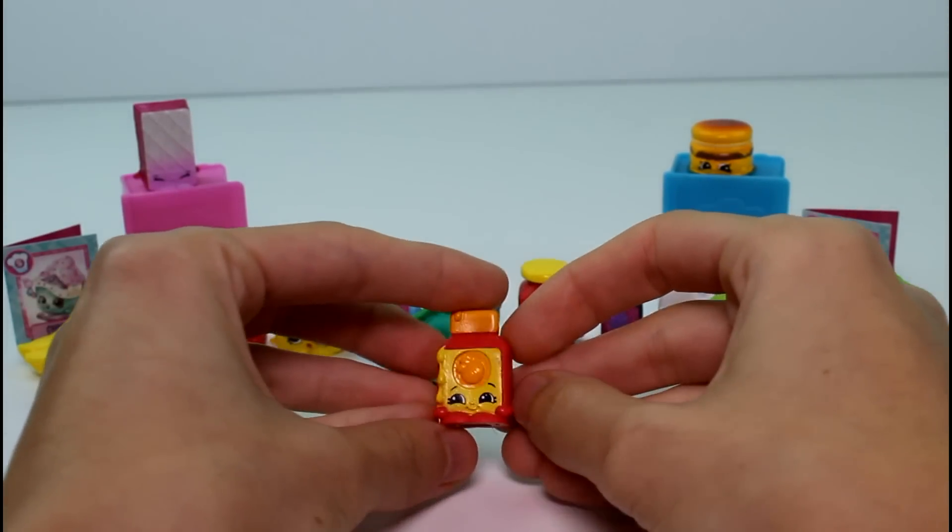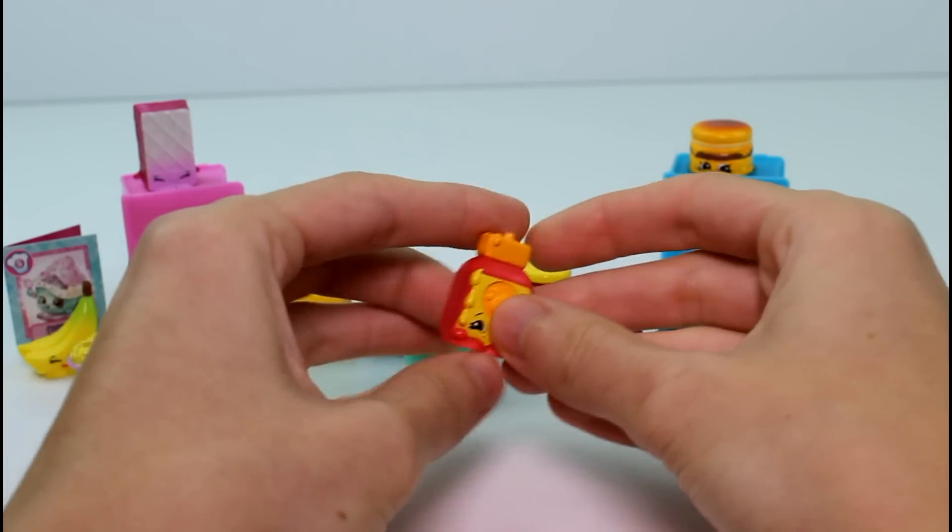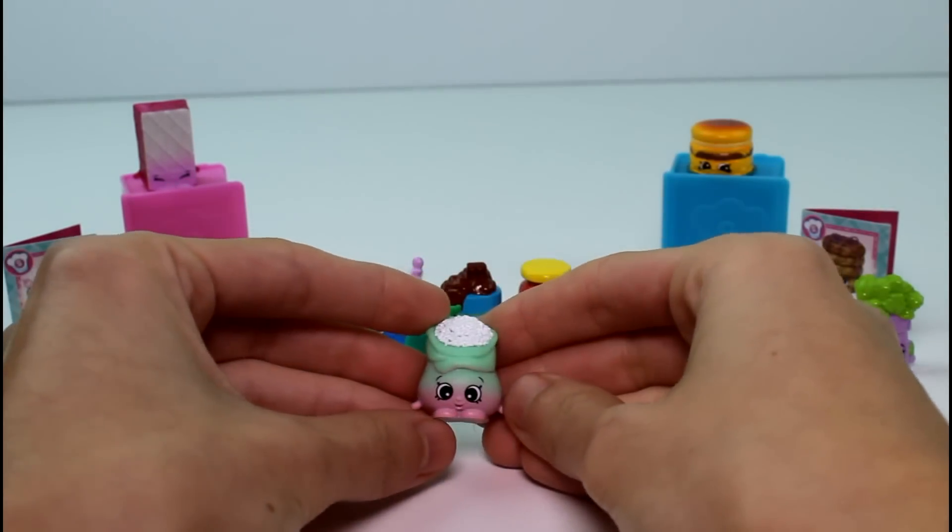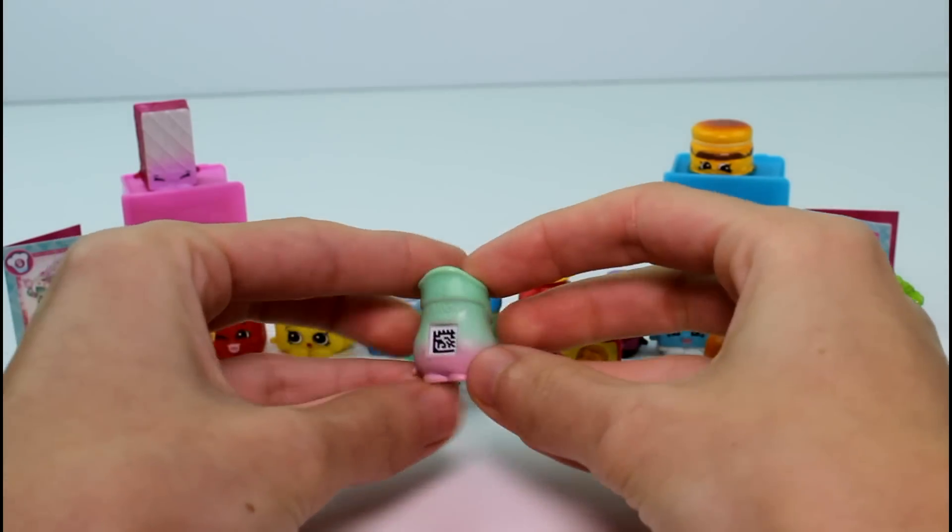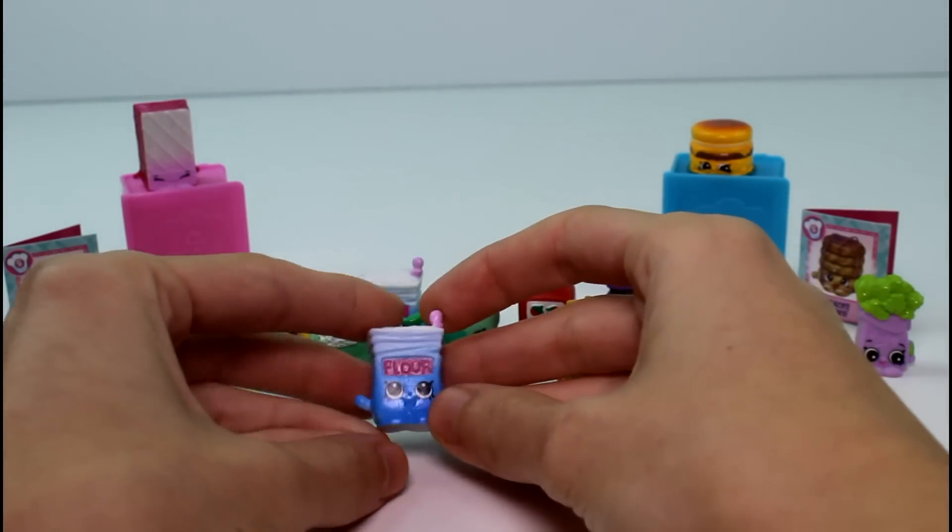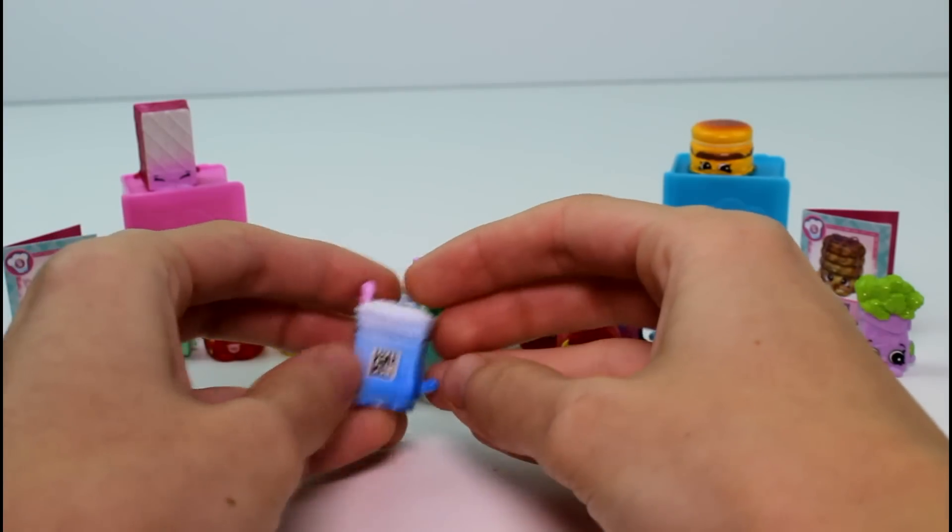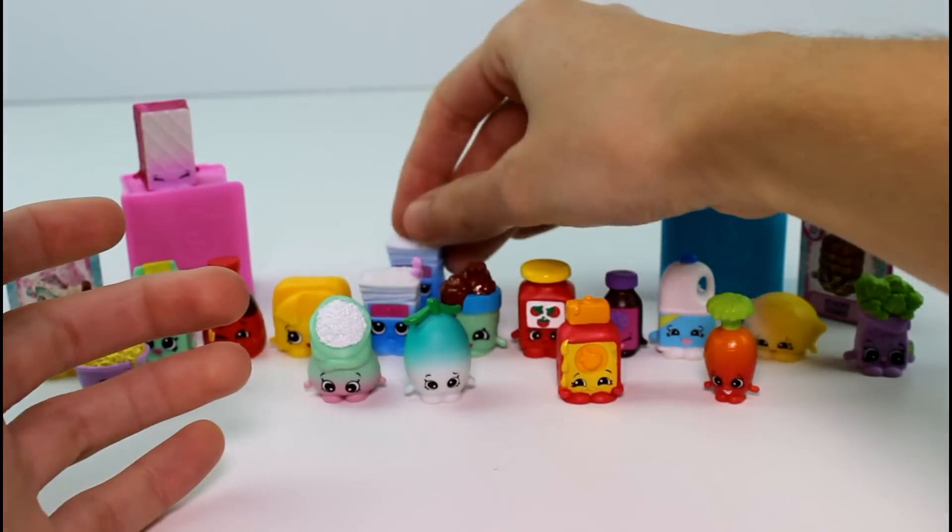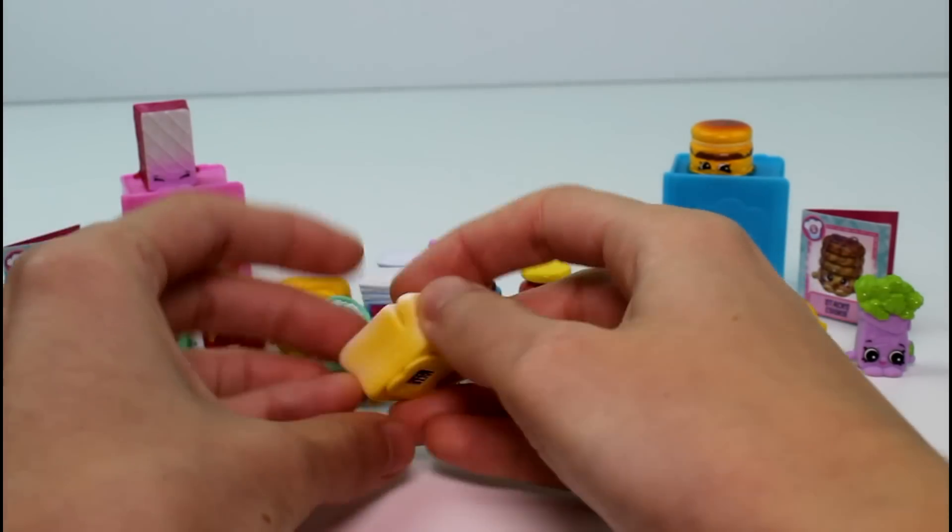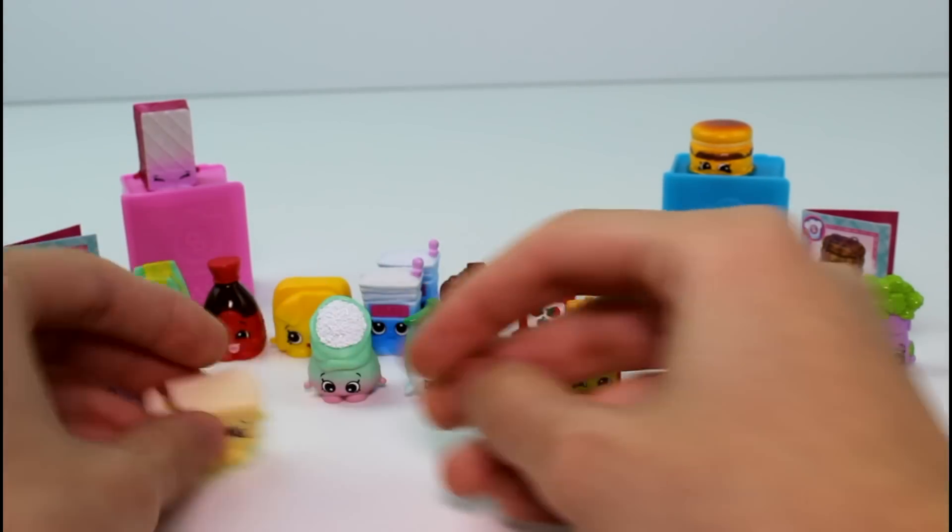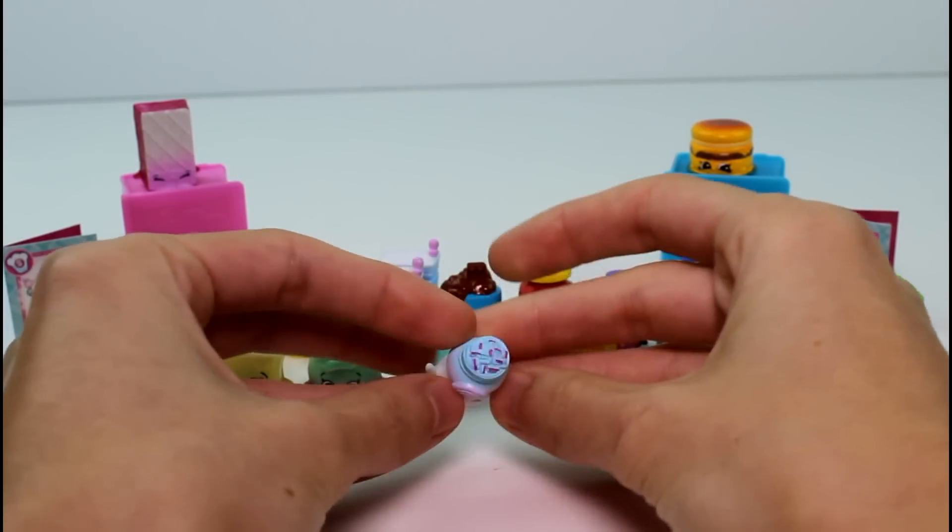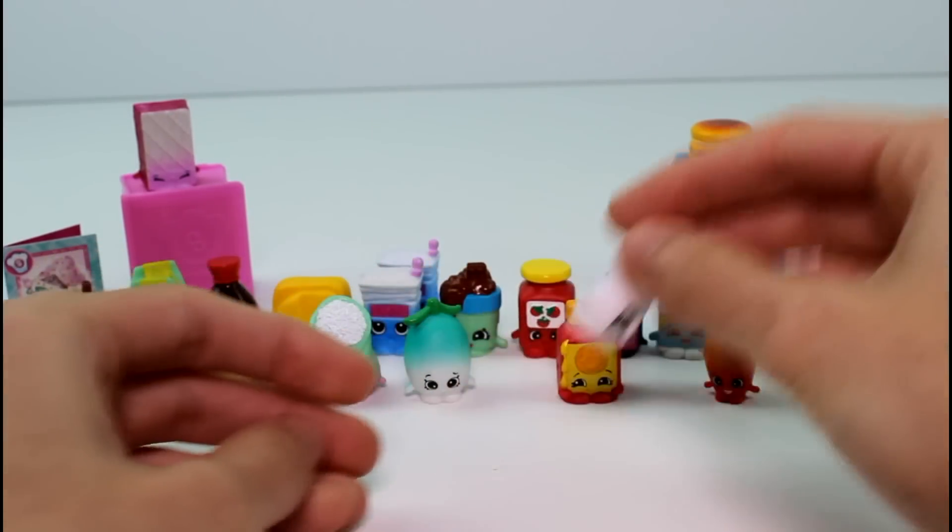We have Runny Honey. And Jasmine Rice. And Fleur Flower again. I think I've gotten a flower in every single pack I've ever opened. And then we have Butsy Butter. Yummy, yummy. And last visible one we have is Miss Sprinkles. With her colorful sprinkles. Awesome!